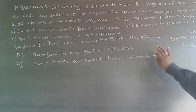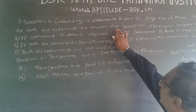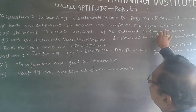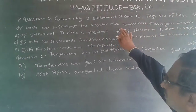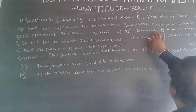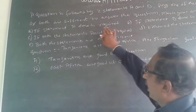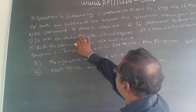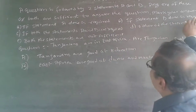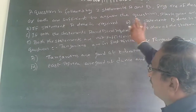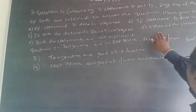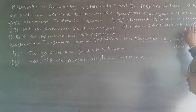The question is followed by two statements A and B. Any of these two statements or both are sufficient to answer the question. Mark your answer as A if statement A alone is required, B if statement B alone is required, C if both statements A and B are required, D if either statement individually is sufficient.